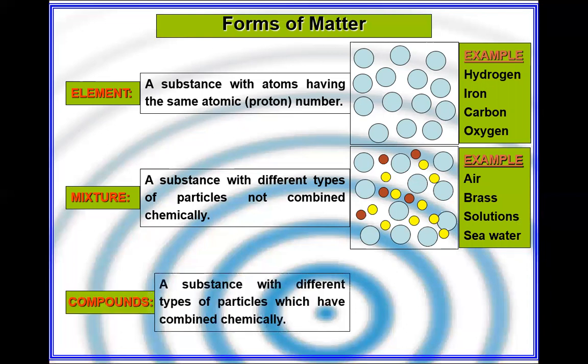Compounds are substances with different types of particles that have combined chemically. When you combine them chemically, you've made a new product, and you cannot easily separate things. For example, once we burn coal, we produce carbon dioxide. If we collect carbon dioxide in a jar, we cannot get back the carbon and oxygen without any particular significant method. Unlike distillation or filtration, we cannot separate carbon and oxygen. You get a new product.